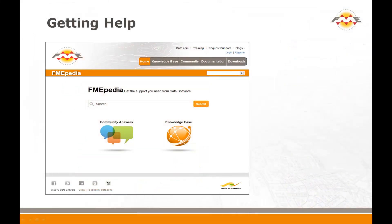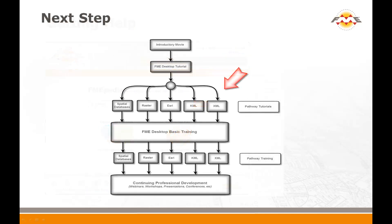If you need any technical assistance while using FME, the best starting point is fmepedia.safe.com. From there you can navigate to downloads, examples, and documentation, and also get in touch with the Safe Software support team. That concludes this movie on Coordinate System Reprojection with FME, and also the whole series of movies covering the FME Desktop tutorial. The next step on the FME training pathway is to focus on a particular path, such as raster data or spatial databases, and to take the tutorial for that.